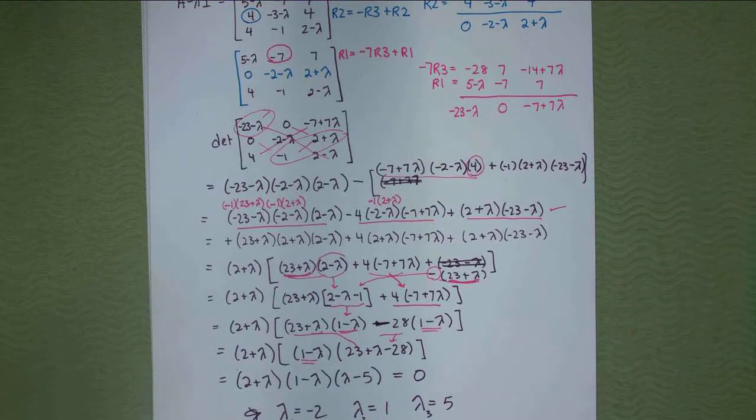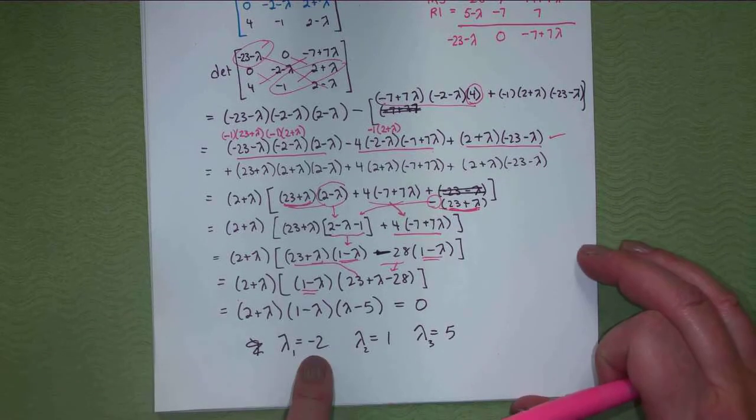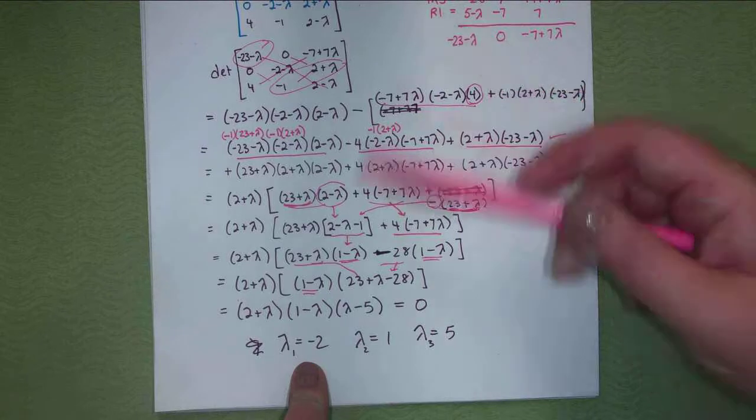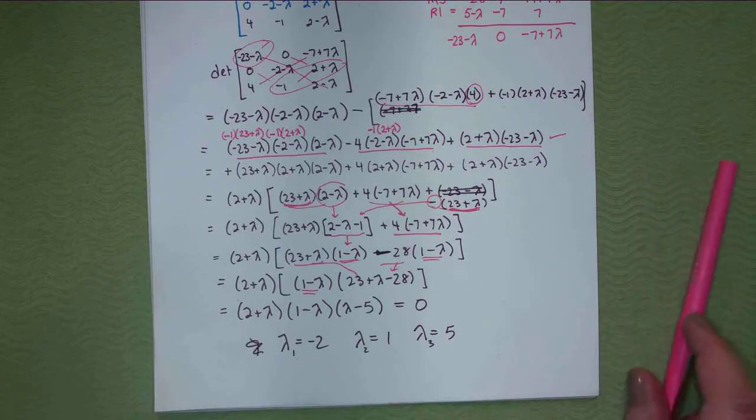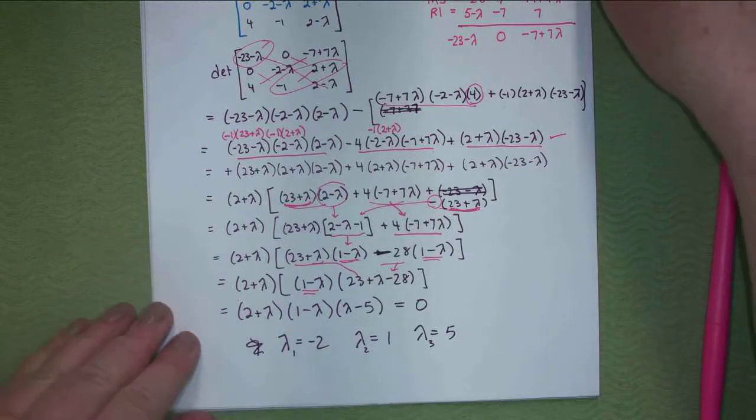So, there will be some homework posted for this. So, you want to try it. Now, of course, if you were to continue on, once you get your numbers, you plug these into the A minus lambda I. You row reduce and get your eigenvectors. So, I just want to show you another example of starting it.